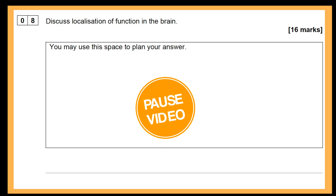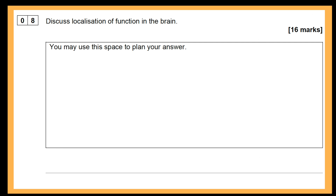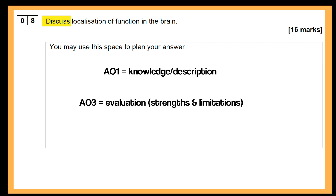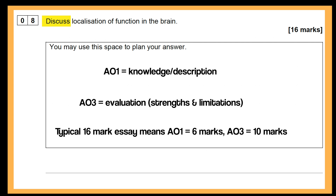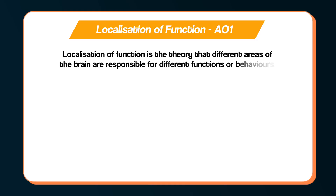Question 8: discuss localization of function in the brain, 16 marks. The command word is discuss, which typically means we need to provide some knowledge of a theory or study — AO1 — and then evaluate it in terms of its strengths and limitations to form a discussion. A typical 16 mark discuss essay question is broken down to 6 marks for AO1 and 10 marks for AO3. For the AO1, always start with the big picture before going into the details. You could start by defining localization of function: the theory that different areas of the brain are responsible for different functions or behaviors.